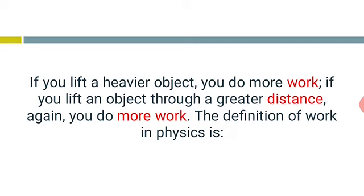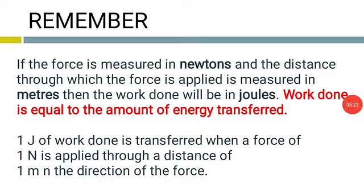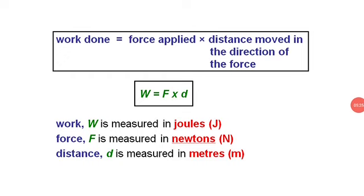There are two things to remember regarding work done: the force you apply when you lift something, and the distance through which you lift it. That is why in physics the formula is: work done equals force applied multiplied by distance moved in the direction of the force — simply W = F × d. Work W is measured in joules, force in newtons, and distance d in meters.